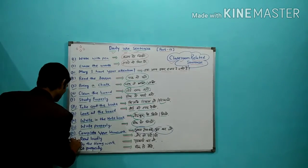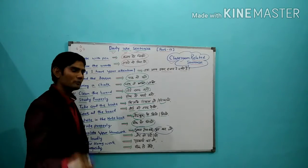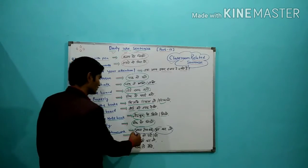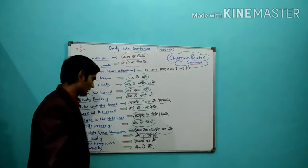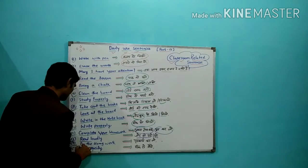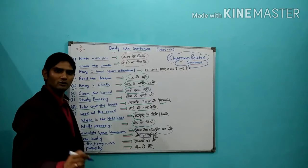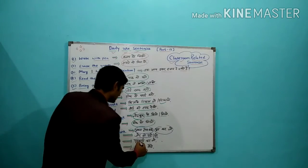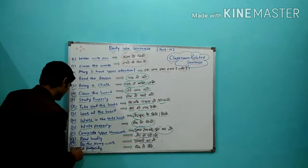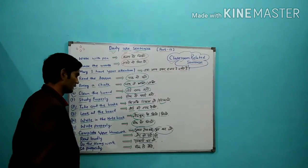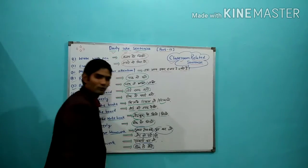Next sentence है: Read loudly. इसका मतलब है, जोर से पढ़ो। Next: Do the homework. इसका मतलब है, homework कर लो। Last sentence है: Sit properly. इसका मतलब है, ठीक से बैठो।